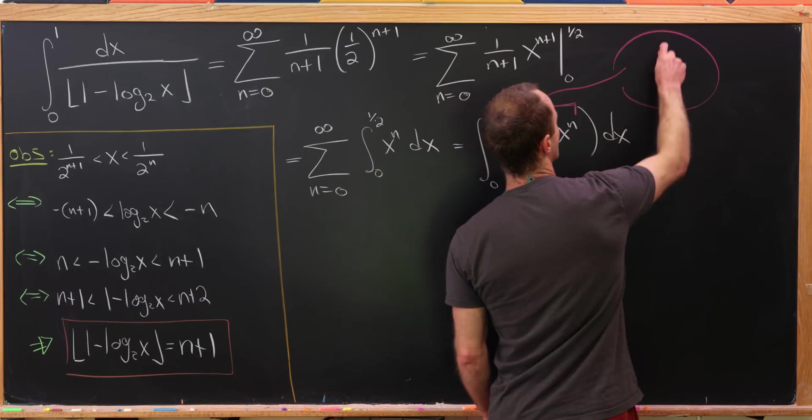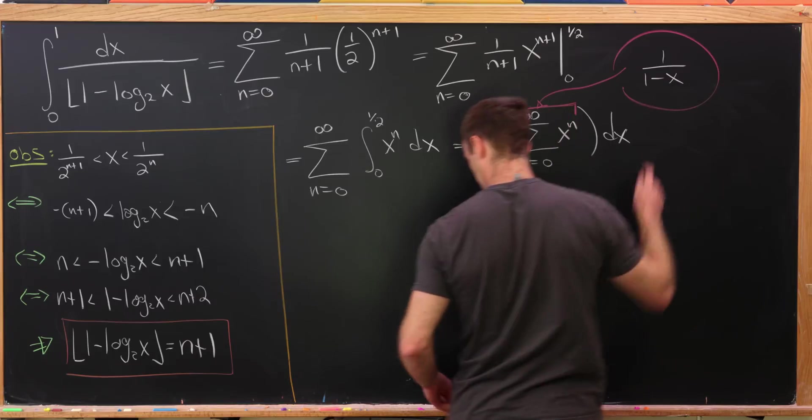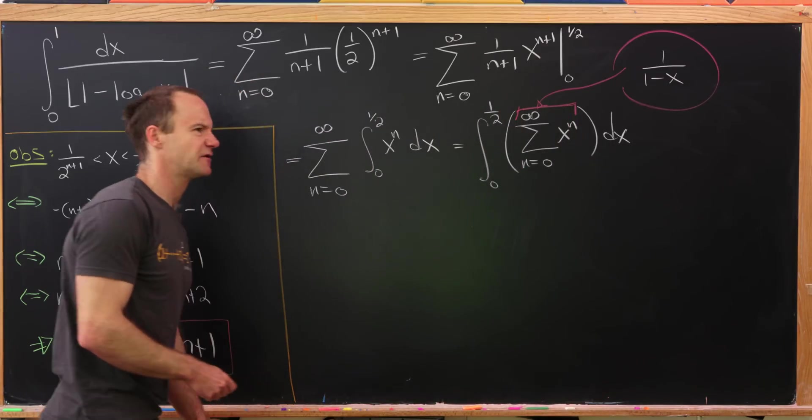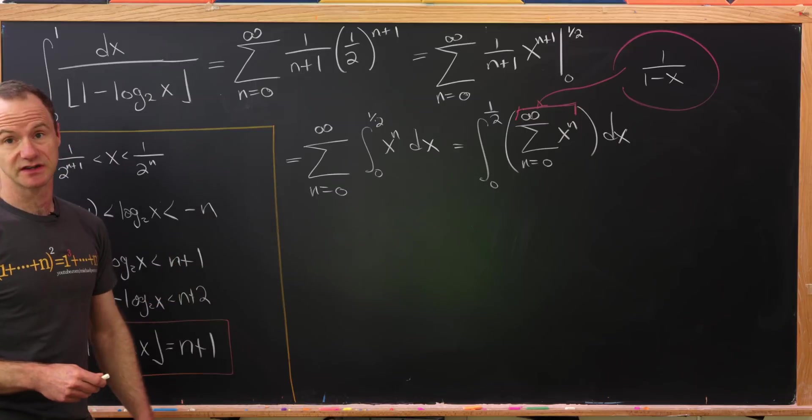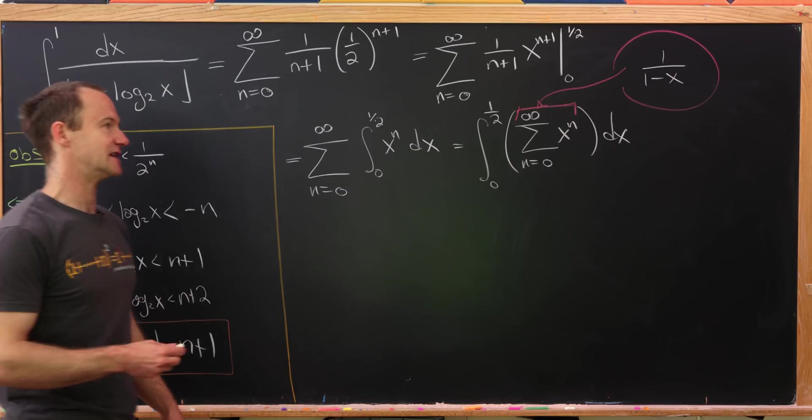this geometric series, which is 1 over 1 minus x. Great. So if there's like one series that you should remember from calculus 2, it's a geometric series. If there's two, probably the Taylor expansion for e to the x.